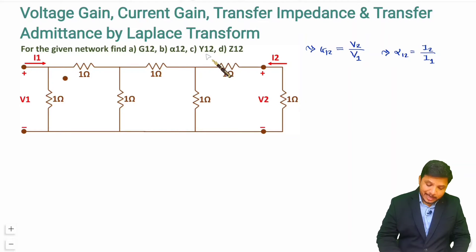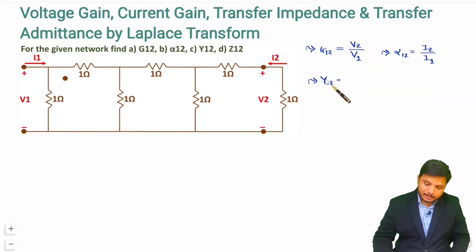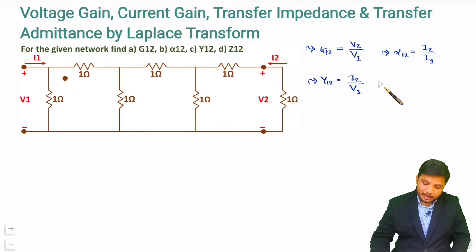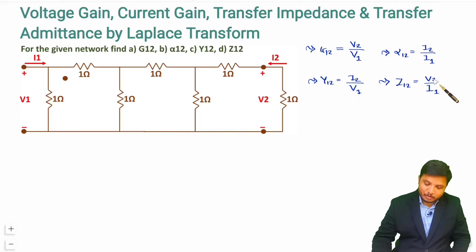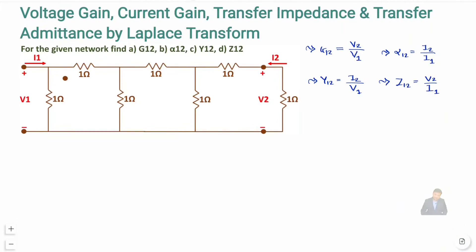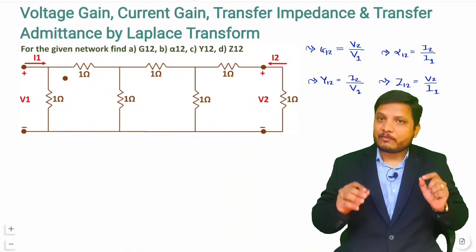Third parameter is Y12. Y12 means transfer admittance. Admittance is current divided by voltage, and 12 means I2 divided by V1. The last one is Z12, which is transfer impedance — voltage divided by current — so Z12 is V2 divided by I1. The second digit is in the numerator and the first digit is in the denominator.